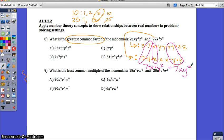7xy squared is your GCF. Remember, greatest common factor means you're looking at what divides those terms. Your GCF is 7xy squared. Let's take a look at number 9 then, the LCM, the least common multiple. Remember what that is.